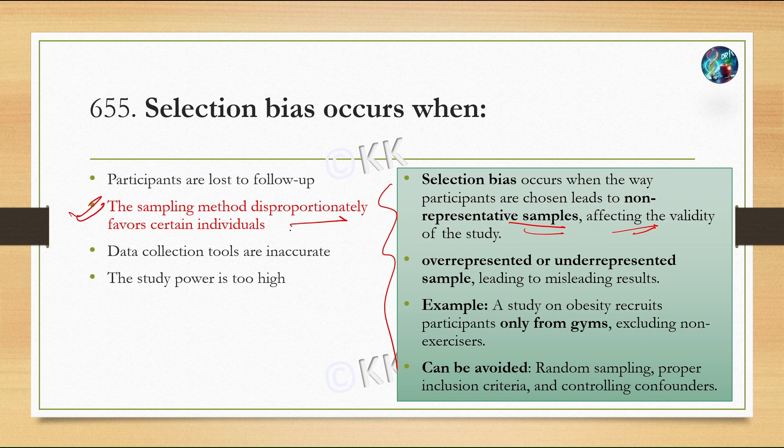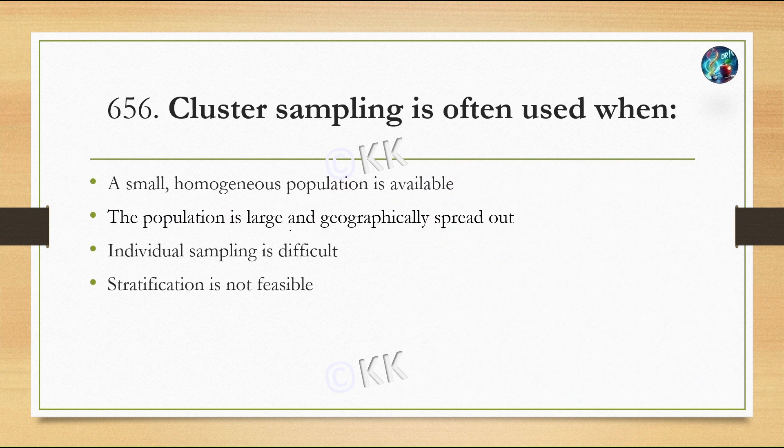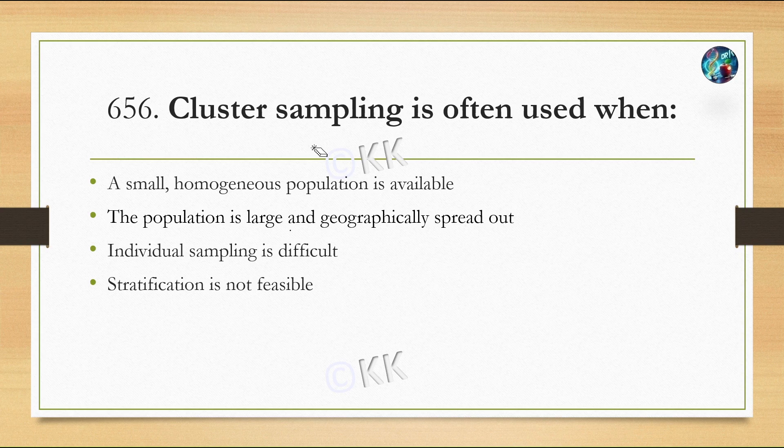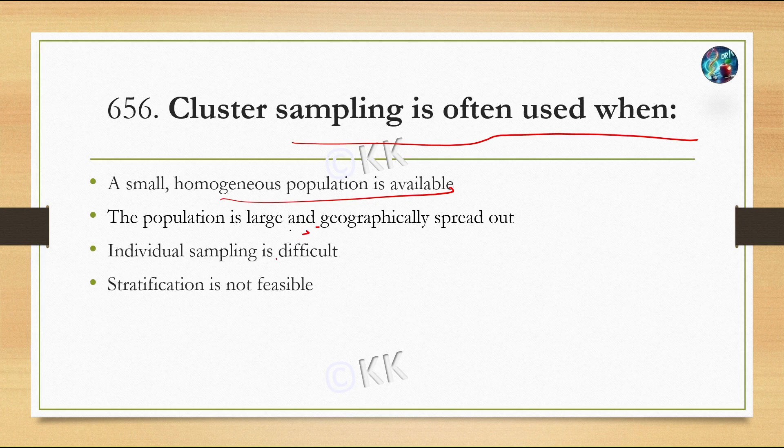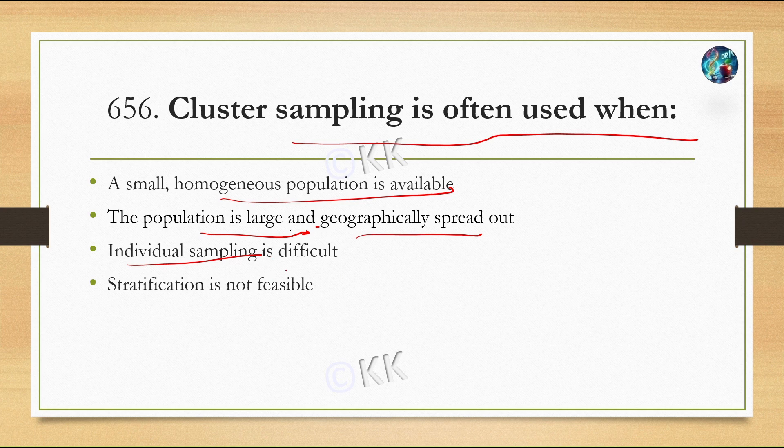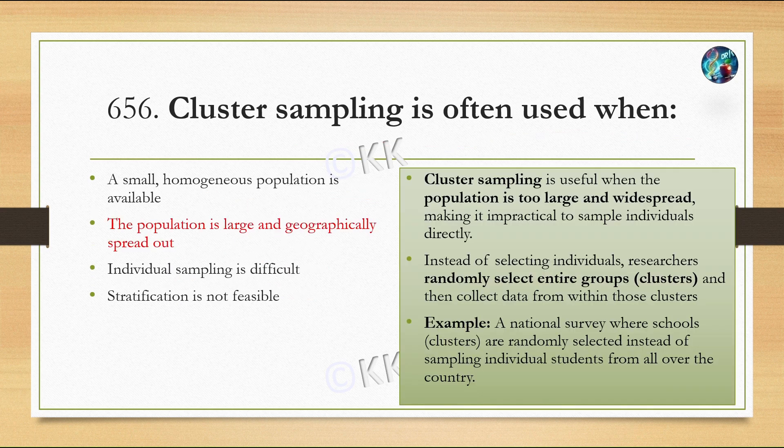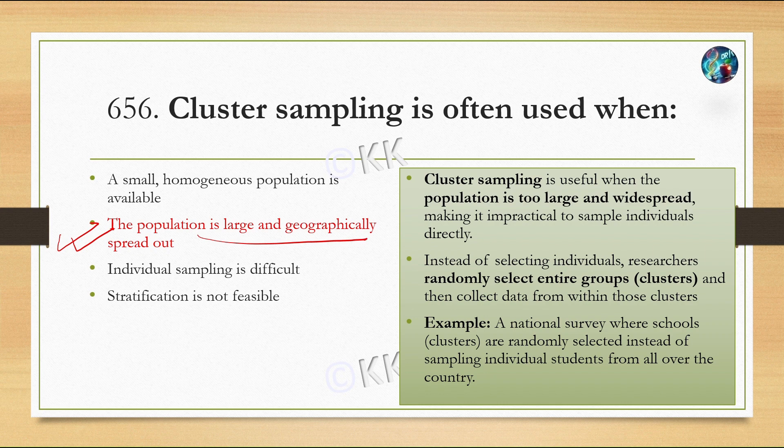Next question: Cluster sampling is often used when: Option A, a small homogeneous population is available; Option B, the population is large and geographically spread out; Option C, individual sampling is difficult; Option D, stratification is not feasible. The correct option is Option B, the population is large and geographically spread out.